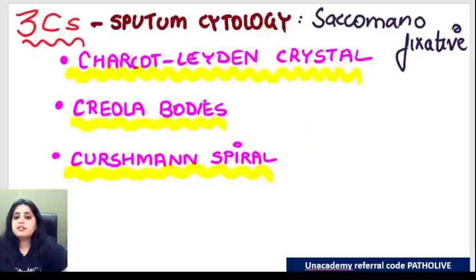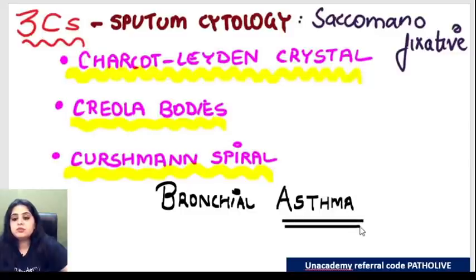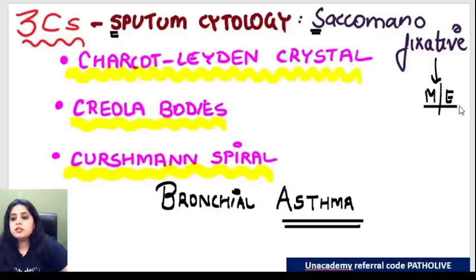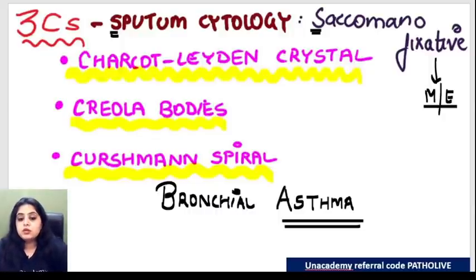The next disease is bronchial asthma. An asthmatic patient produces a lot of sputum. You take that sputum, fix it in a fixative known as Saccamano fixative, and take it for microscopic examination. From an asthmatic patient, if you take the sputum, fix it in Saccamano fixative, and look under the microscope, you'll see the three C's. The names are: C for Charcot-Leyden crystals, C for Creola bodies, and C for Curschmann spiral.